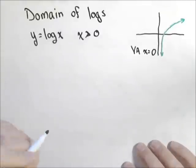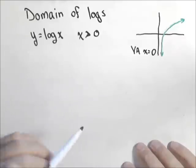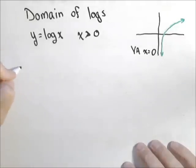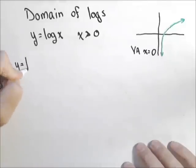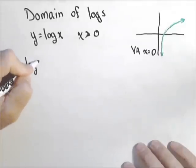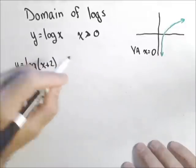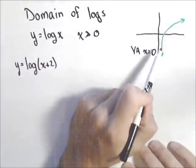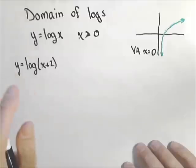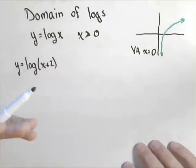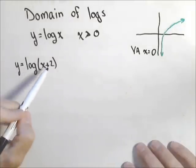Now, what's going to happen is we'll look at logarithmic functions that are shifted left and right, and that changes where the vertical asymptote is. For instance, if we had the function y equals log of x plus two, that would shift our graph two units to the left, which shifts the vertical asymptote two units to the left as well.